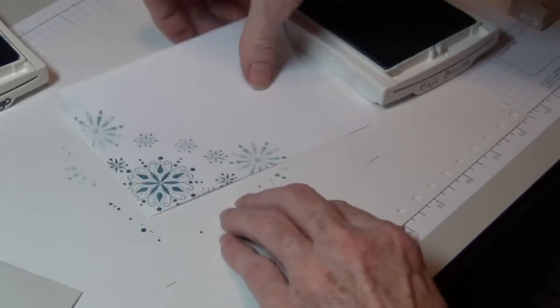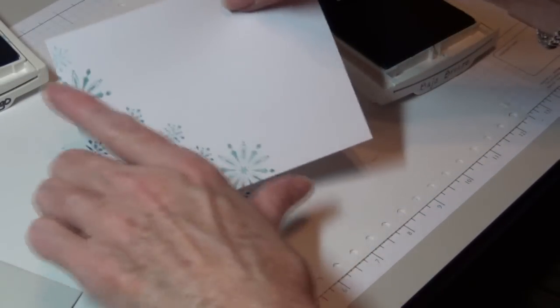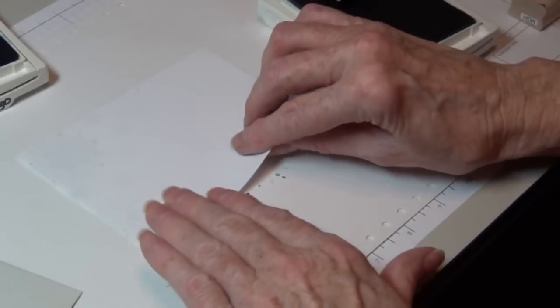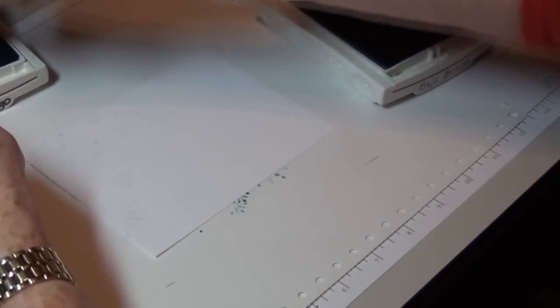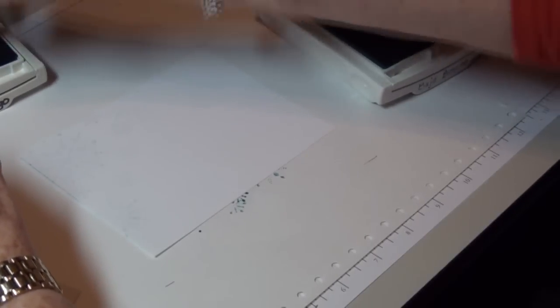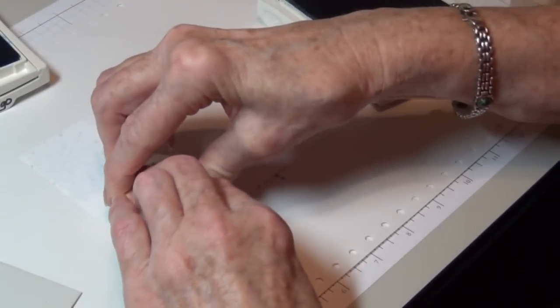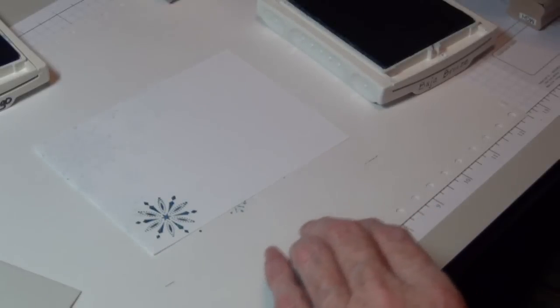Let me show you a little trick. Turn your piece of paper over. You can see this is our corner here. And now I'm going to take and I'm going to stamp this in the Island Indigo, this middle size snowflake. And I'm going to press that like so.